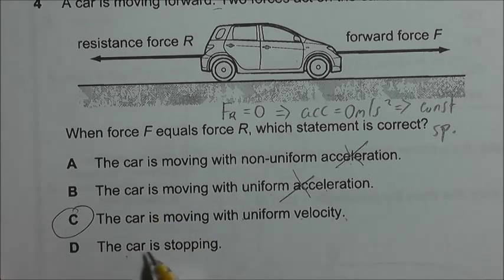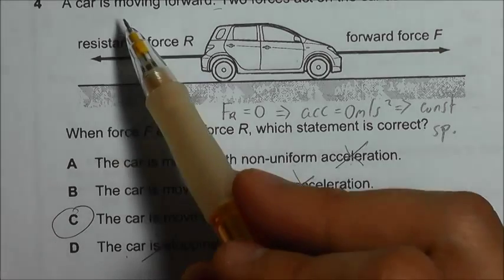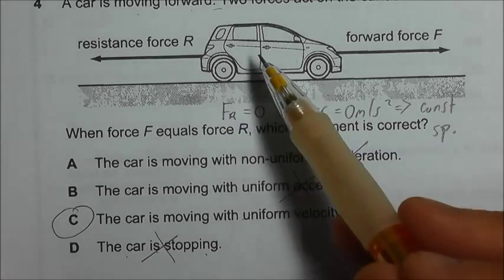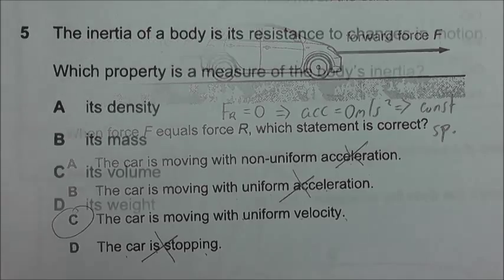So C is the answer and the car is stopping. This is not correct because the car is already moving forward. So even when there's no resultant force, the car is supposed to move forward at the same speed.